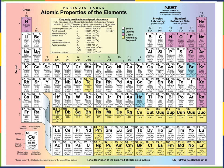Oxygen has an atomic number of eight, so there are eight protons in the nucleus of an oxygen atom, giving it a mass of 16 atomic mass units. If there are eight protons, there would be eight electrons to equally balance them. Similarly, nitrogen has seven protons, seven electrons to balance that, and seven neutrons, giving it an atomic mass of 14.